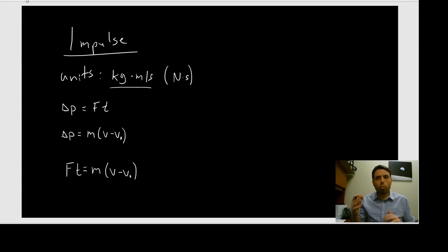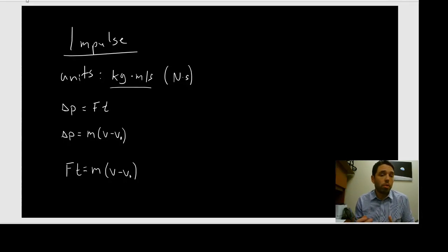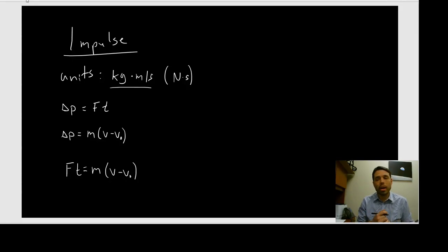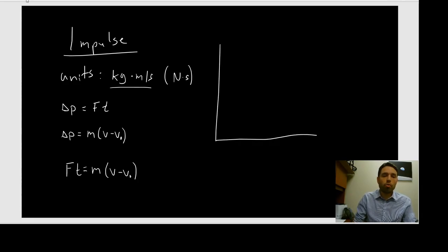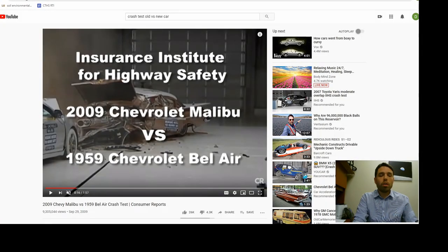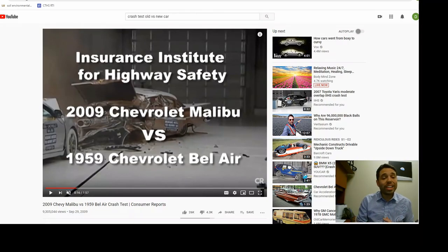So why is impulse important? I want to show you a video of a car crash. Here's a 2009 Malibu and a 1959 Bel Air — they're going to collide in a driver-to-driver collision, each going maybe 30 or 40 miles per hour. As the cars collide, they're both applying force to one another — Newton's third law — applying a large impulse force over a small amount of time.